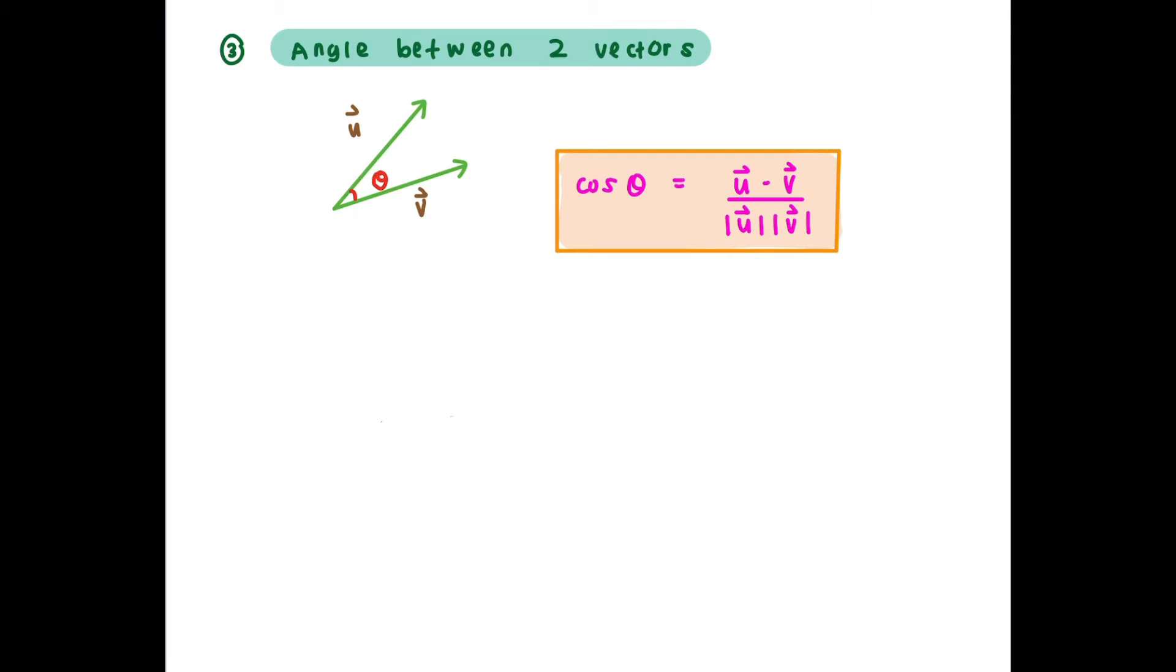So what is the formula? The formula is cos theta equal to u dot v over magnitude u magnitude v. After we have calculated all of this, you can find theta by finding inverse cos of this value here.